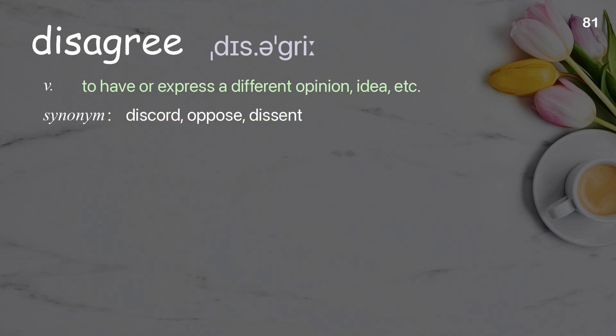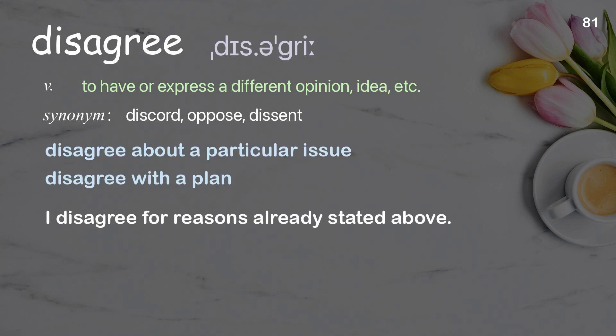Disagree: to have or express a different opinion or idea. Examples: disagree about a particular issue, disagree with a plan. I disagree for reasons already stated above.